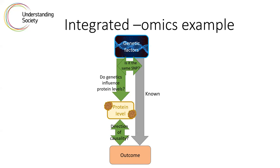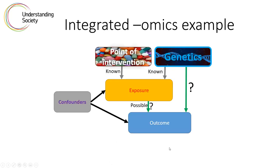Using this as a model, can you think of any other outcomes where we already know there's a genetic component, but we might want to explore whether there is a pathway from genes to protein levels to outcome? This might be especially important if the protein level can be modified by an intervention like medicine or exercise. And what about the earlier example of cholesterol and dementia, where confounding variables made it impossible to look at causality, so a genetic proxy was used to represent the exposure? Are there other examples that would fit into a model like this?